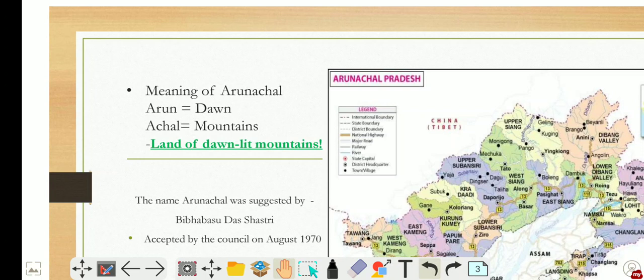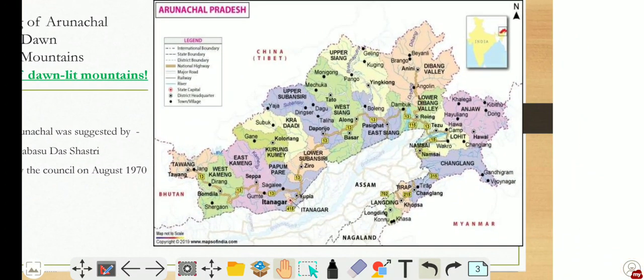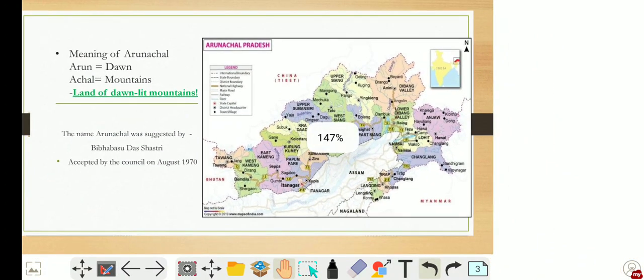And the then Prime Minister Indira Gandhi formally announced the name at Itanagar Zero. This is the map of Arunachal.